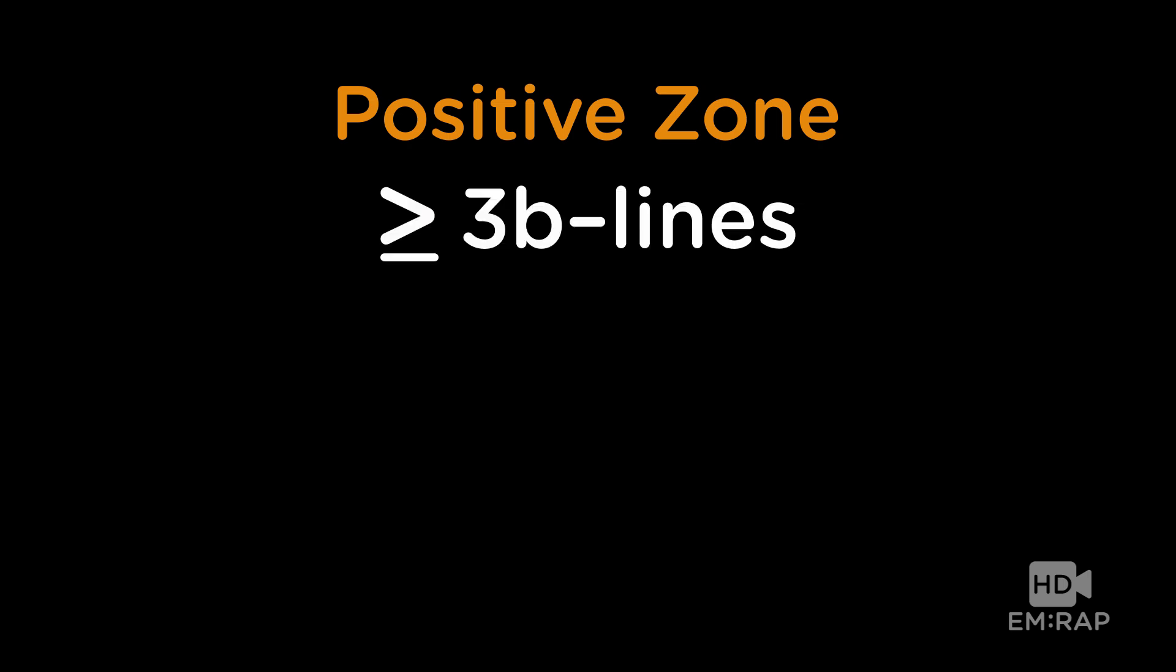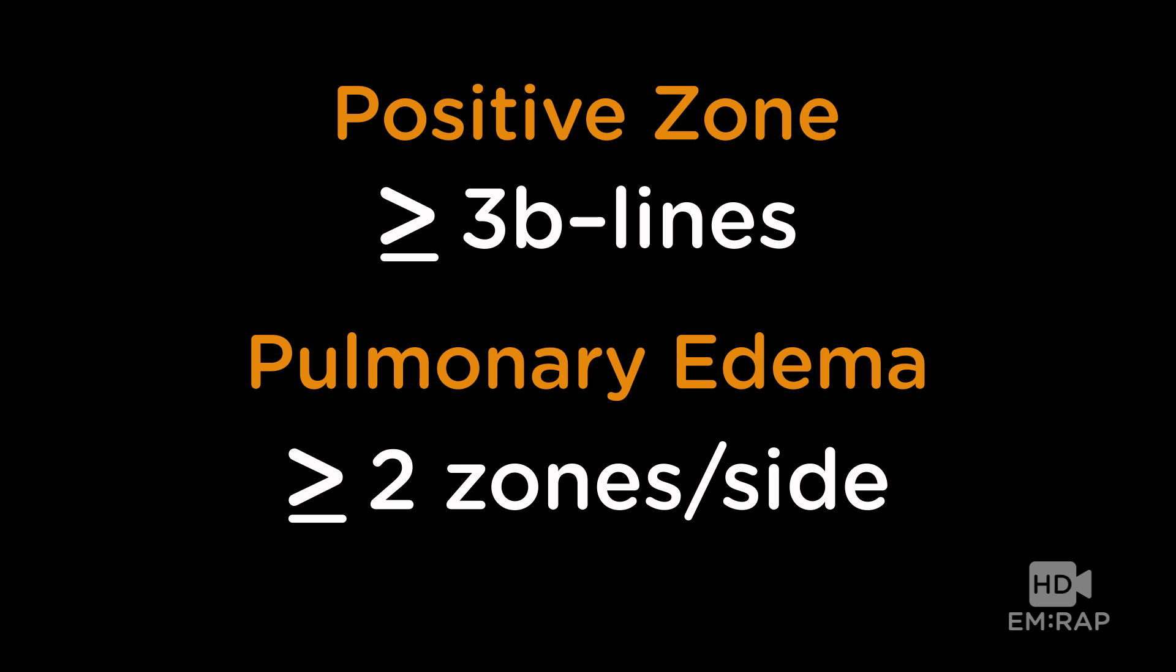So to recap, to have a positive zone for pulmonary edema, you have to have three or more B lines. So three or more B lines per zone equals a positive zone. For the patient to be considered to have pulmonary edema, so it's diffuse pulmonary edema, you have to have two positive zones per side. So three or more B lines in two or more zones per side gives you a patient with pulmonary edema.